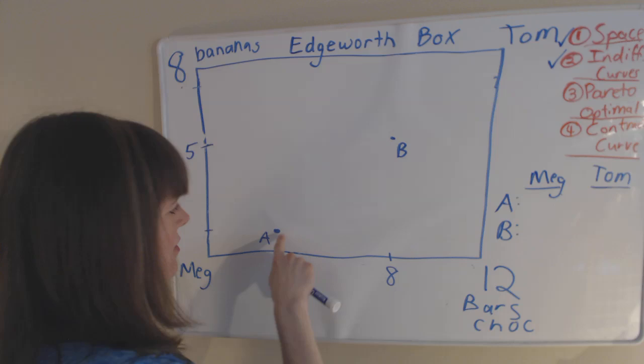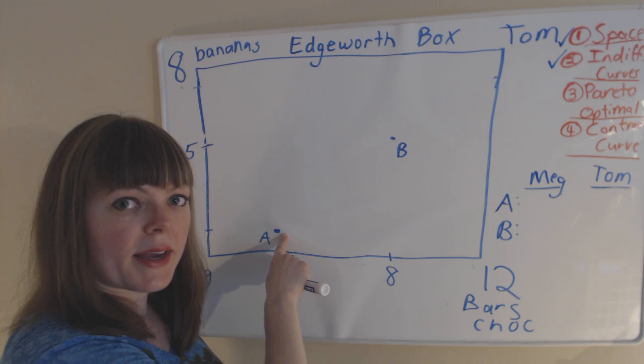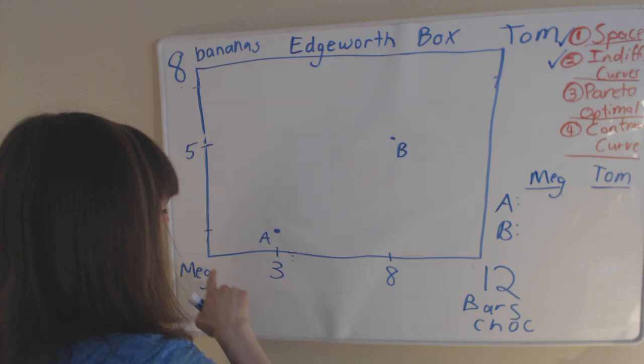So the first thing we need to understand is the space we're working with. And I have two points on this space. And the thing about each point on this space is it has two perspectives. One is Meg's perspective, and the other is Tom's perspective.